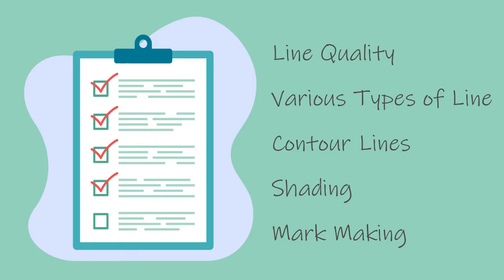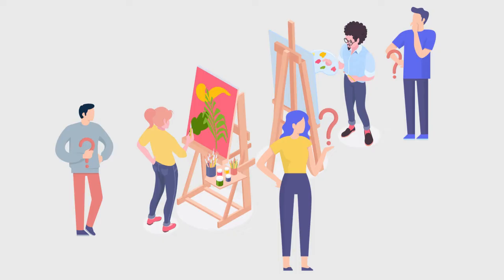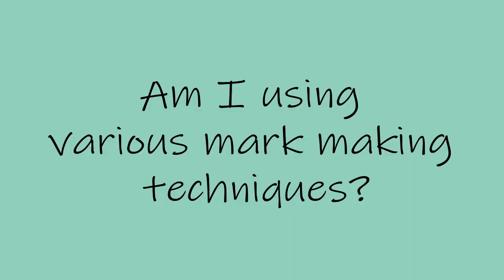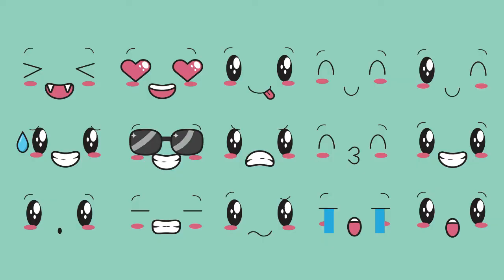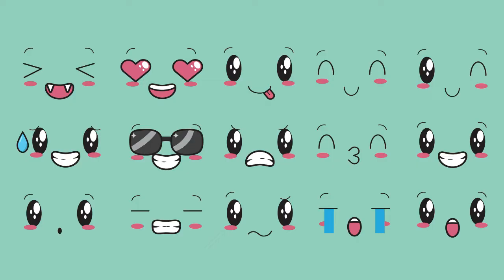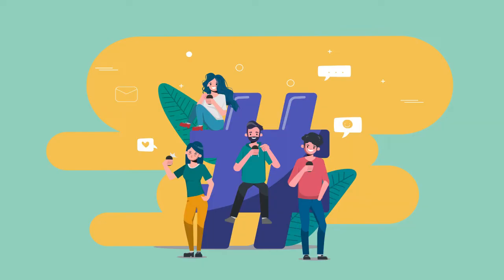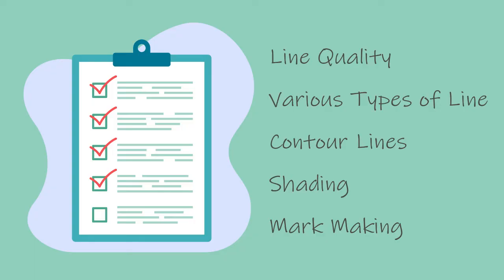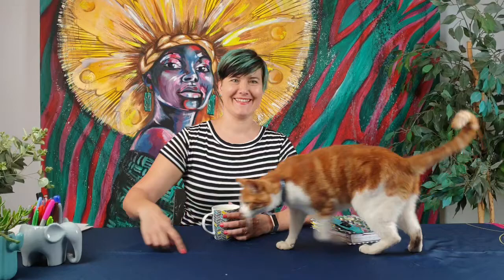Now that you know all about lines, line quality, and different mark making techniques, how does this help you improve your own artwork? Whenever you look at your artwork, ask yourself: am I using great line quality? Am I using various mark making techniques? Does the kind of line I'm using aid the message of the artwork? Does the line match the emotion I'm trying to evoke? I meet a lot of students and usually they have amazing art heroes they follow on Pinterest or Instagram, and they usually have no idea how to actually achieve that kind of amazing art. Most of the time the issue is with their line application — they're not varying their lines, their lines are not interesting enough, they're not looking closely enough. Art is all about training your eye, and I hope this video has helped you to train your eye to see line in a new way.